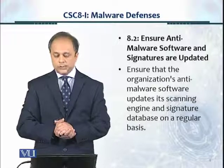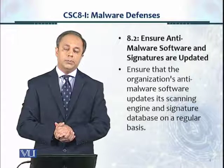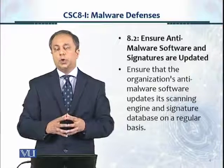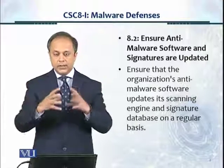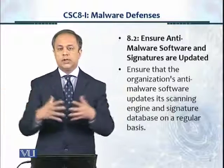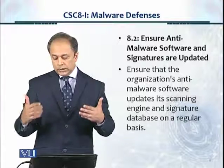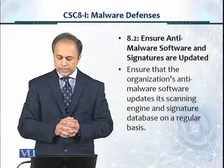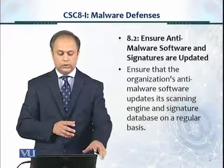Control 8.2 tells us to ensure anti-malware software and signatures are updated. It's very important to keep an eye and make sure that these are updated, because anti-malware protection usually works from the signature method. Whatever traffic is coming in, it will look at the signature of that traffic and match it with malicious traffic signatures, and if there's a match, it will block it. Since it's dependent upon signatures, it's important to update them so that we have the latest protection. Ensure that the organization's anti-malware software updates its scanning engine and signature database on a regular basis.